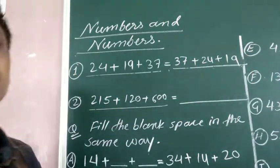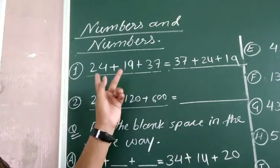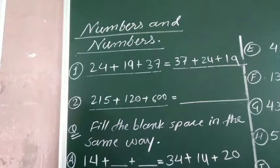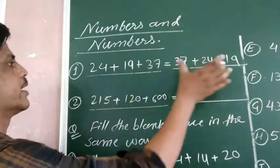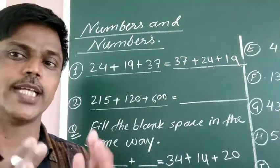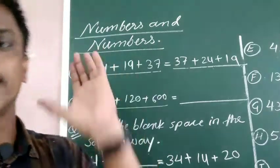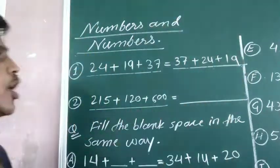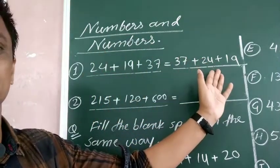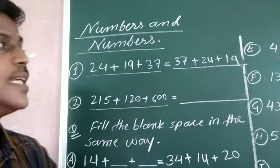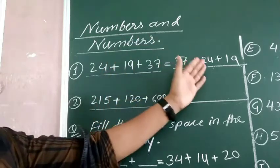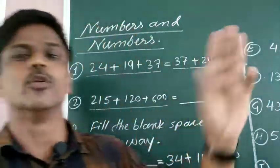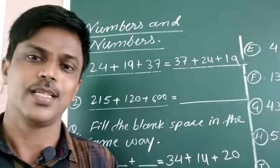So: 24 plus 19 plus 37 equals 37 plus 24 plus 19. Do you think the addition of these three numbers and those three numbers are equal without any calculation? Yes, it is definitely equal. Why? Because the same three numbers are used in both — only the order is changed, the numbers are not changed. That is why the sum of the three numbers will be the same.